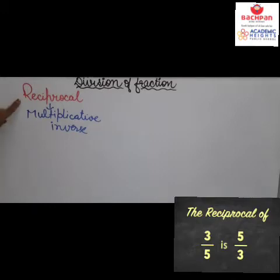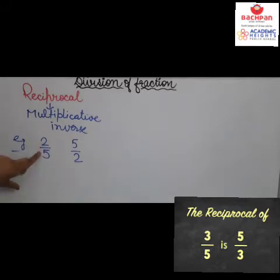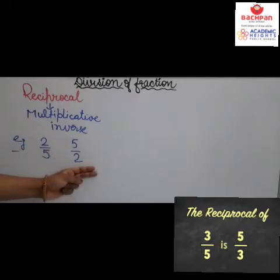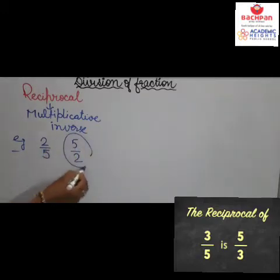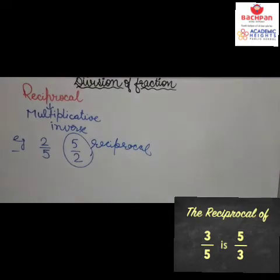Let us revise reciprocal with an example. Suppose we have the fraction 2 upon 5. To get the reciprocal of a fraction, interchange the numerator and denominator — so 2 upon 5 becomes 5 upon 2.